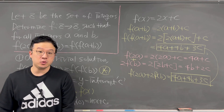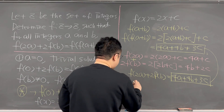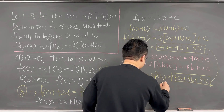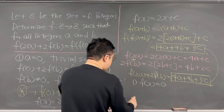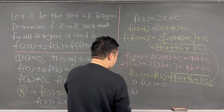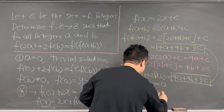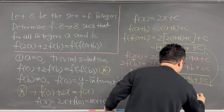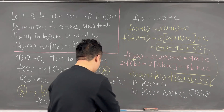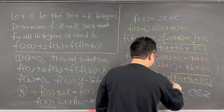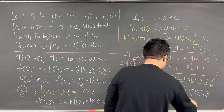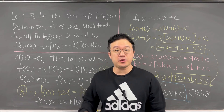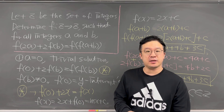So we should have two answers. One of them is the trivial one that we found in the beginning: f of x is equal to 0. The second one is f of x equals 2x plus c, where c has to be an integer. So that's why we have two answers for this question. Pretty interesting functional equation from the International Math Olympiad. I'll be back with more videos with more questions like this sometime soon.